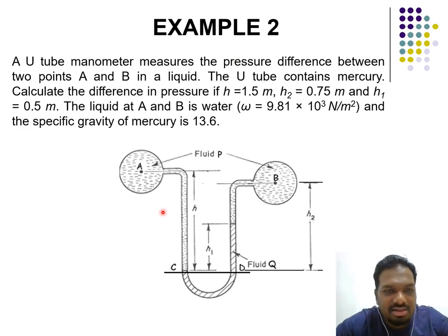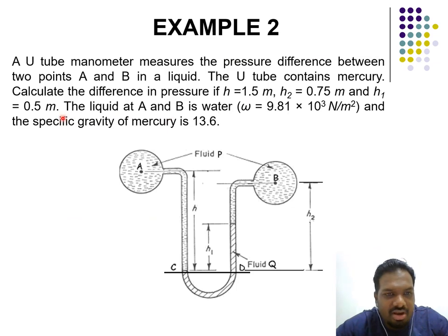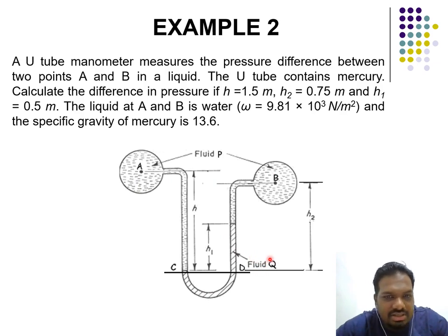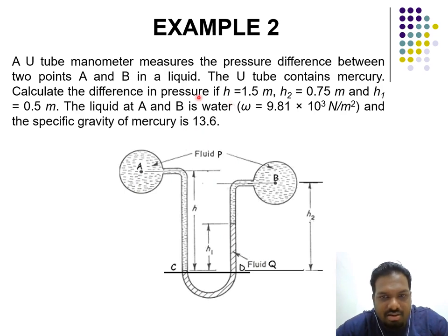Here is an example: a U-tube differential manometer measures the pressure difference between two points A and B in a liquid. Both A and B are in fluid P (water), and in between there is fluid Q (mercury) whose density is given. All height information is provided and we need to solve for the pressure difference.